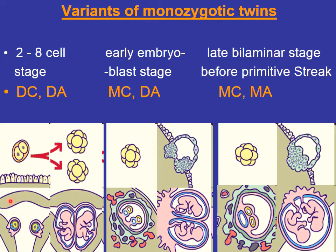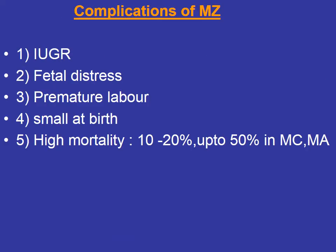To summarize the variants of monozygotic twins by time of separation: the most common is splitting at the early blastocyst stage, giving one chorion and two amnions. The second most common is separation as early as the blastomere stage, sometimes even the two-cell stage. The rarest case results in a common amniotic cavity and shows the highest mortality and complication rate.